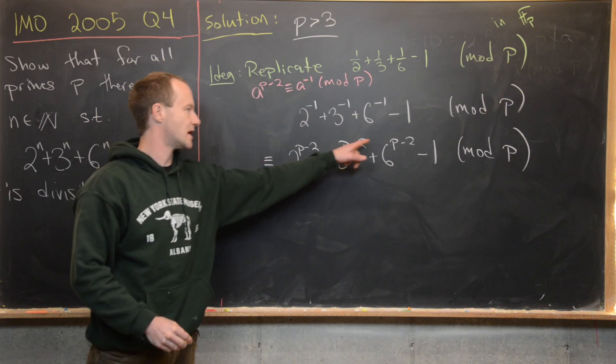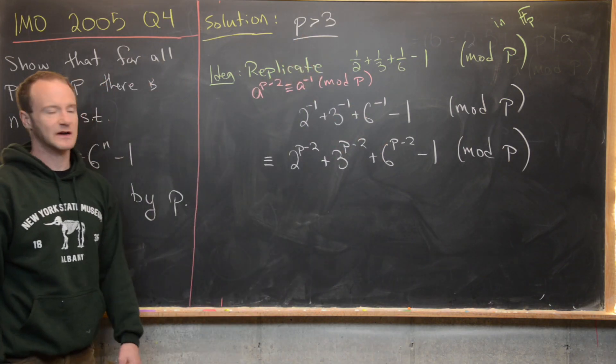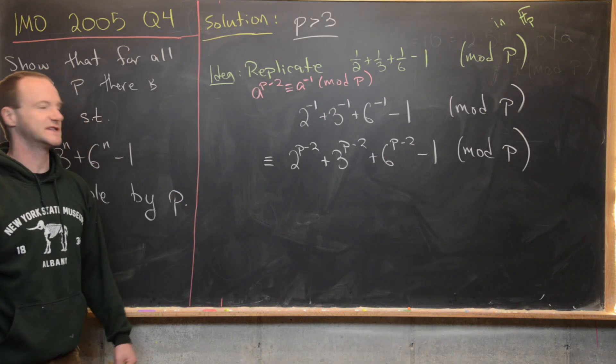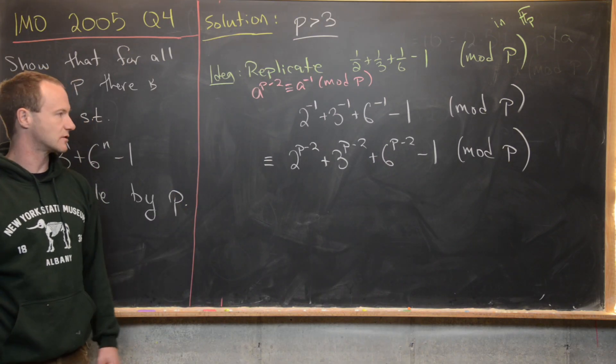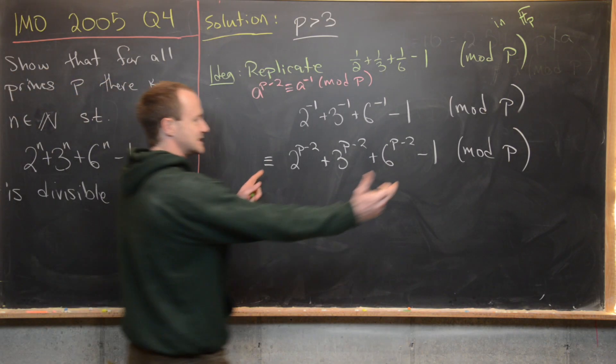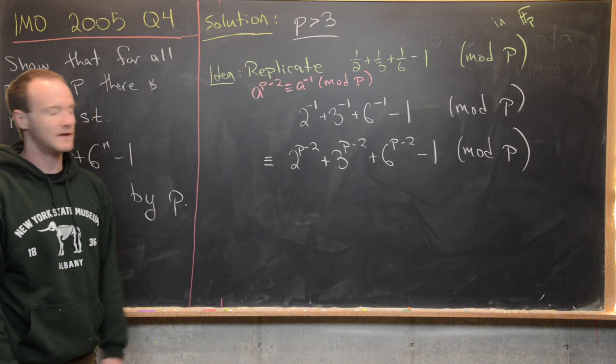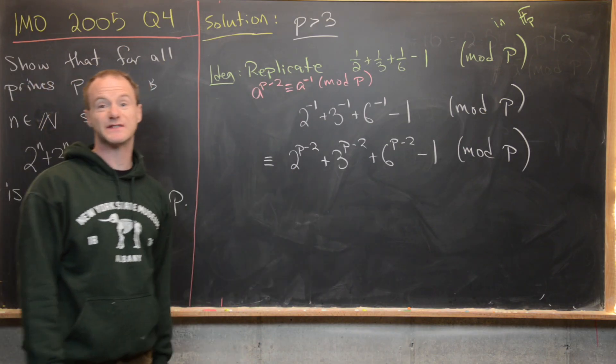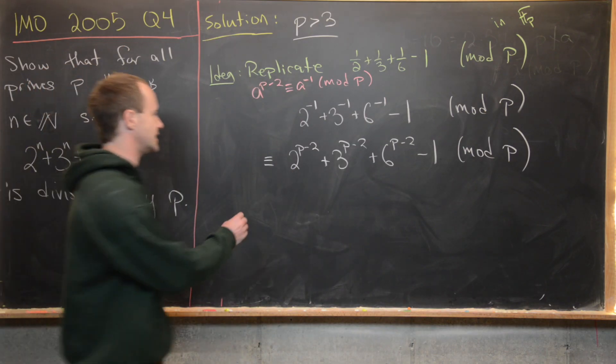We know that these are all natural numbers because p is bigger than 3. So hopefully this is congruent to zero mod p, because if it's congruent to zero mod p, that means that this object right here is a multiple of p and then we're done. Now let's factor a 6^(p-2) out of these first three terms and see what we get.